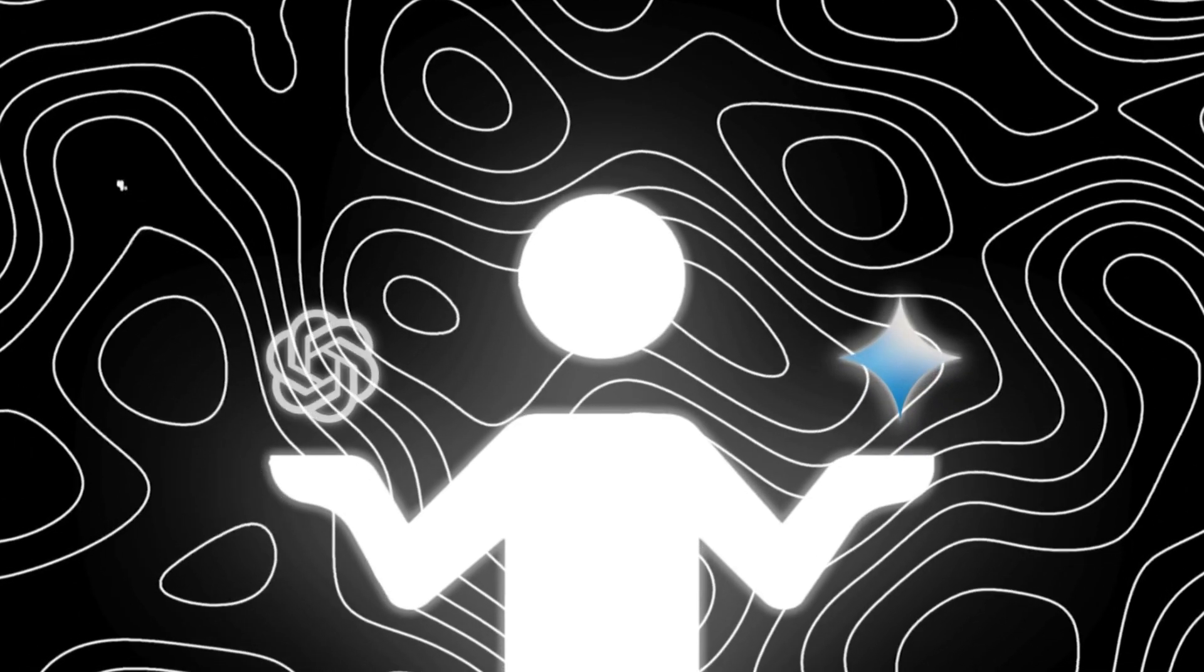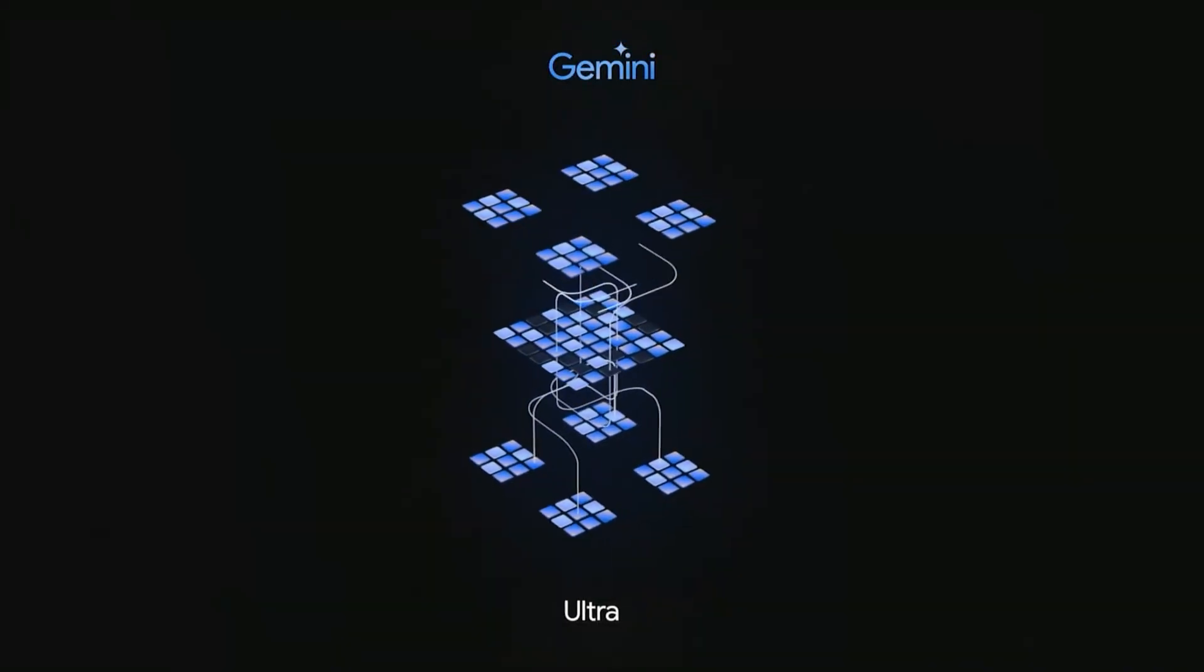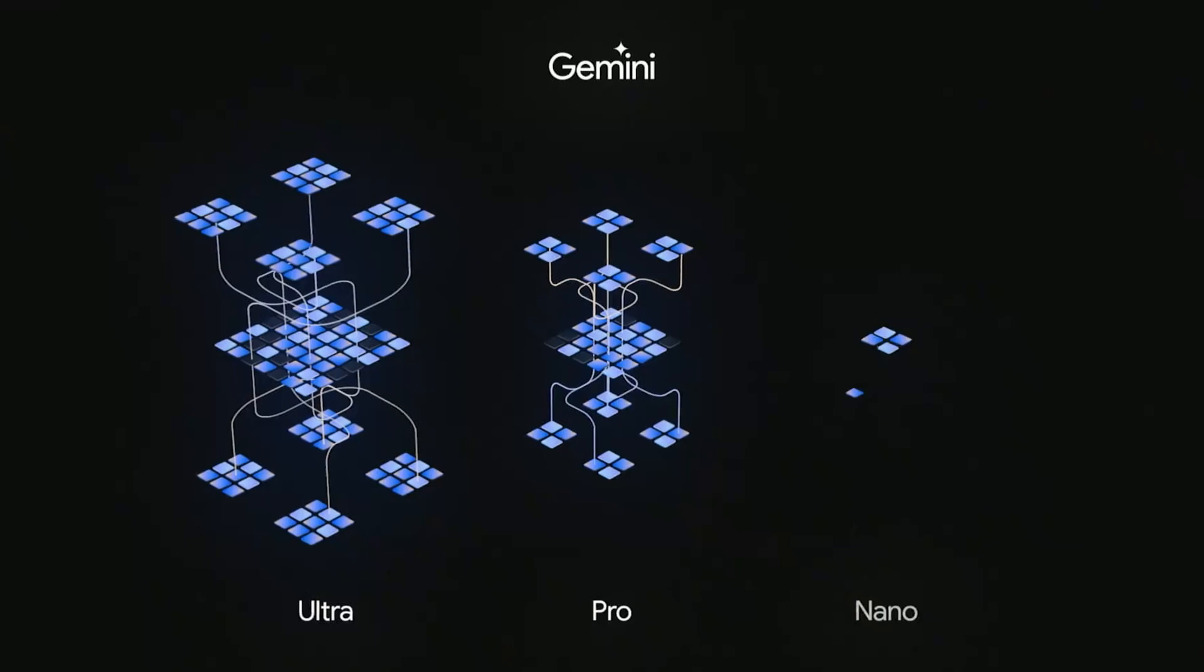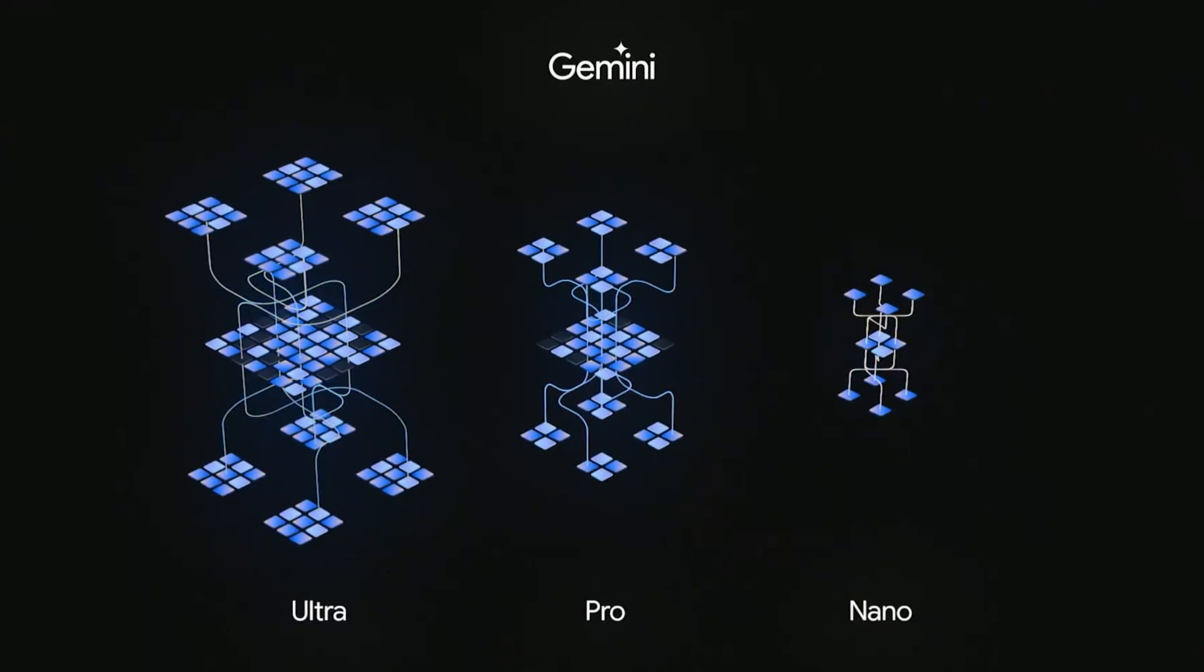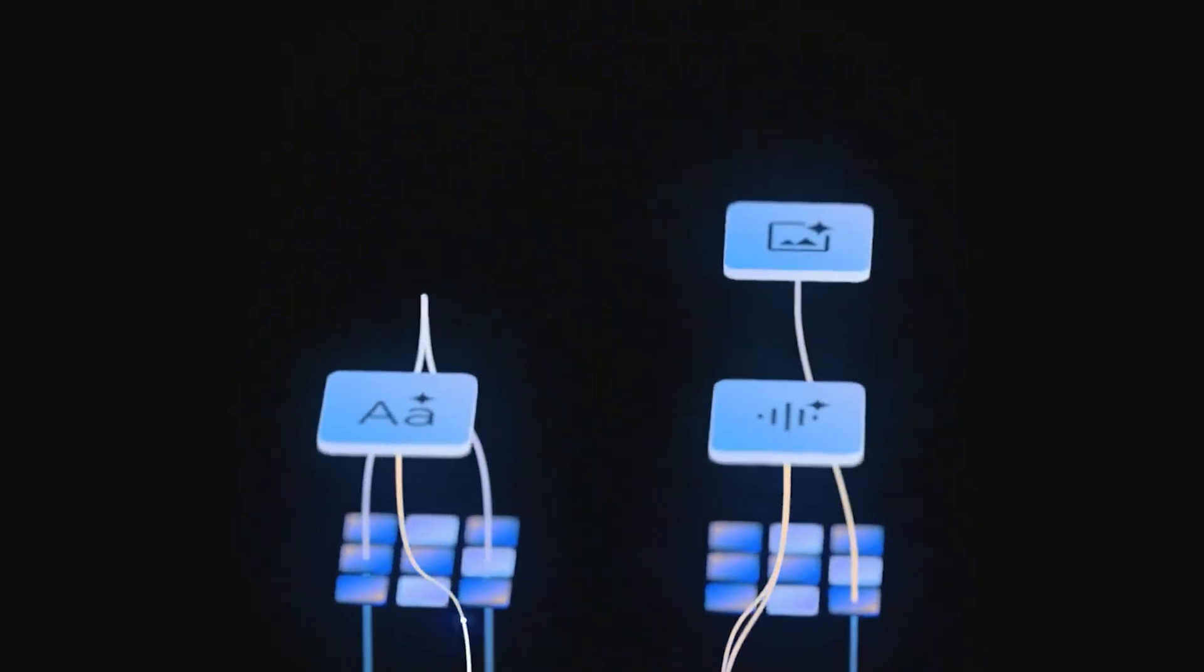First things first, let me introduce both AI models. Google Gemini is a multimodal AI model designed from the ground up to understand and process not only text, but also images, videos and audio. Chat GPT-4, on the other hand, is primarily focused on text.